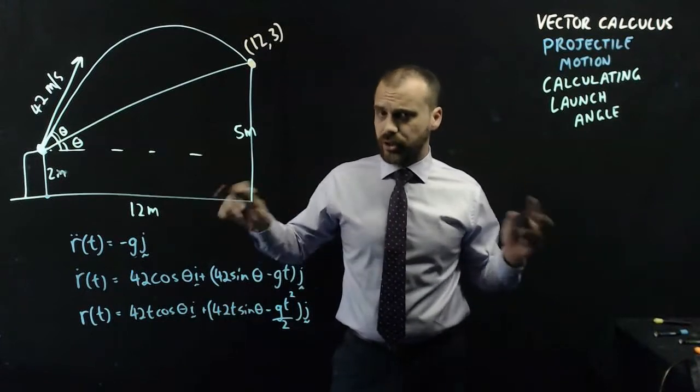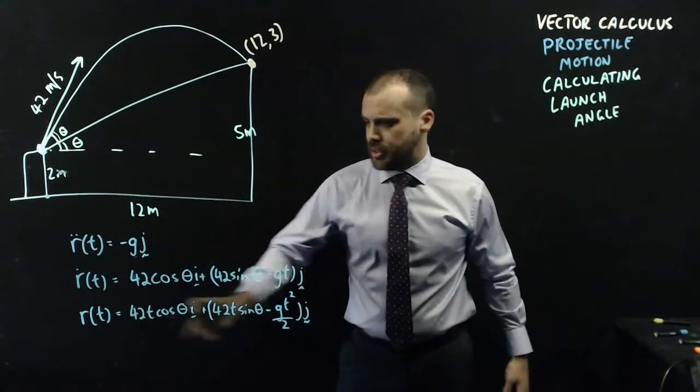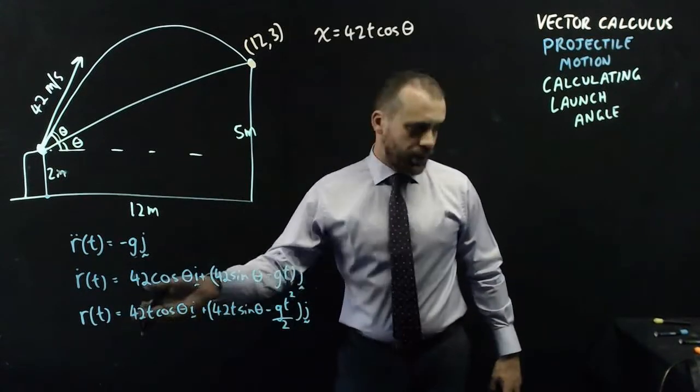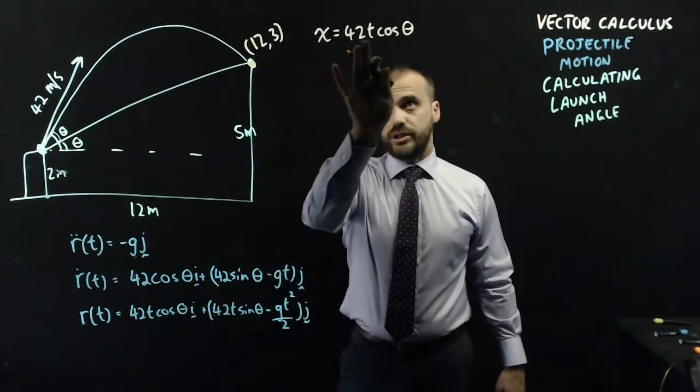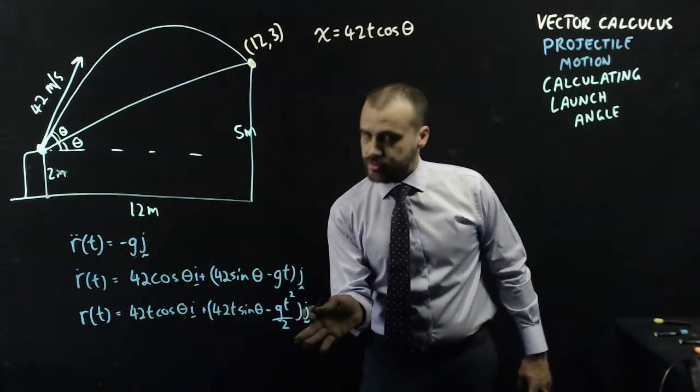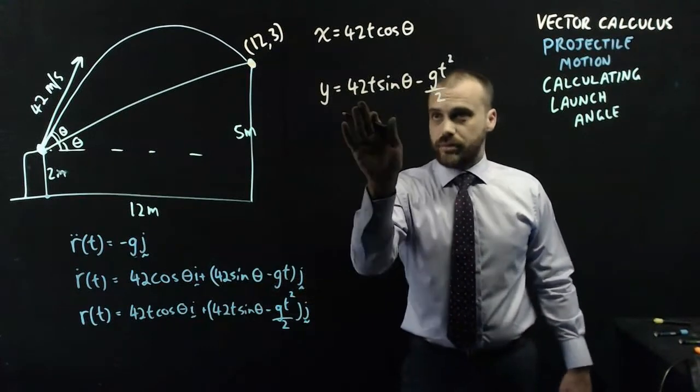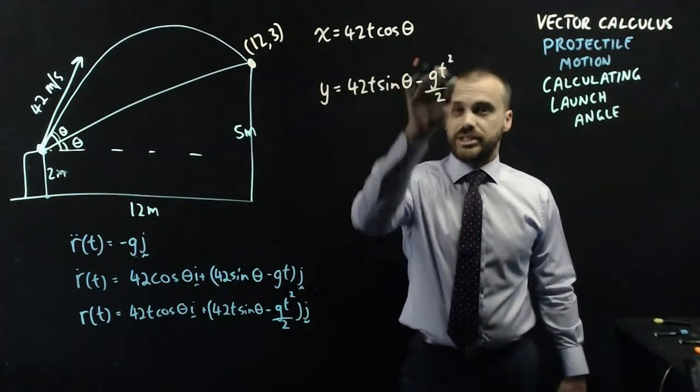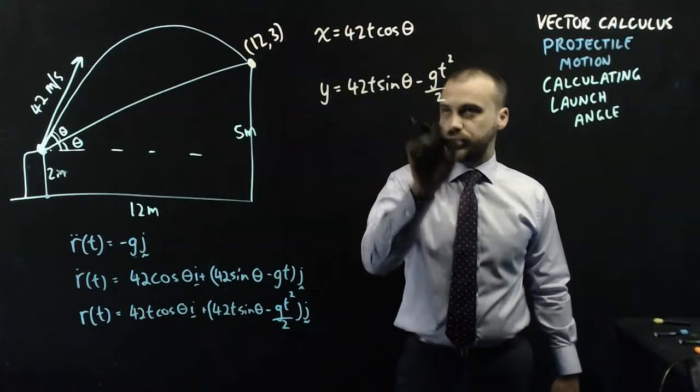So let's take this bit. My x-coordinate at any given time is 42t cos theta. Let's take this bit. My y-coordinate at any given time is 42t sin theta minus gt squared all over 2.